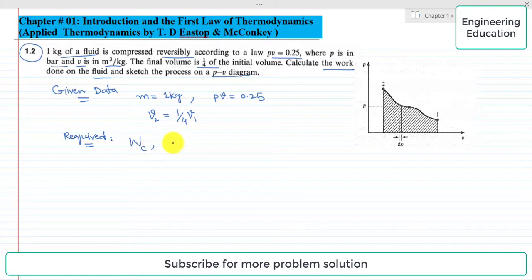We are required to find the work done and sketch it on a PV diagram. Before coming to the solution, let us discuss the expression developed for the reversible compression process. This is the pressure-specific volume diagram. Let's suppose this is state 1 and this is state 2.